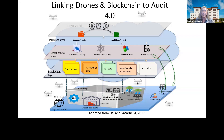I love this illustration from Miklos's paper — if you notice, there are little objects in there. These are drones. It's very nice to have the drones fit in there as validators of information at the physical world level and also at the mirror world.